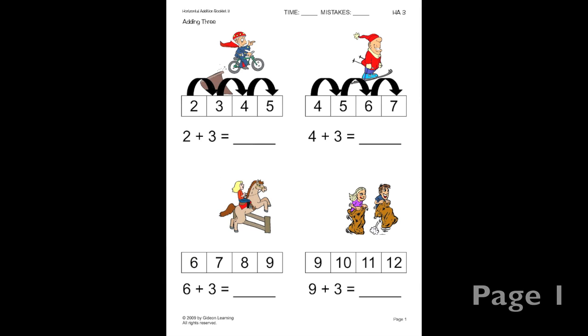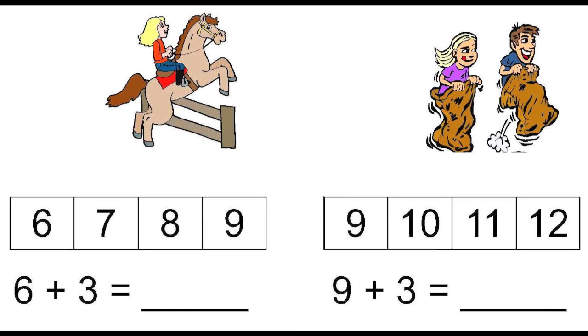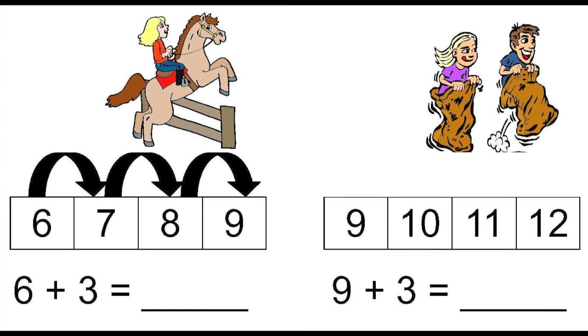Now let's look at how we add 3. Let's look at our first problem. We have 6 plus 3. In your head you need to think, what is 3 numbers after 6? The first number after 6 is 7. After that is 8. And then the third number is going to be 9. So 6 plus 3 is 9.